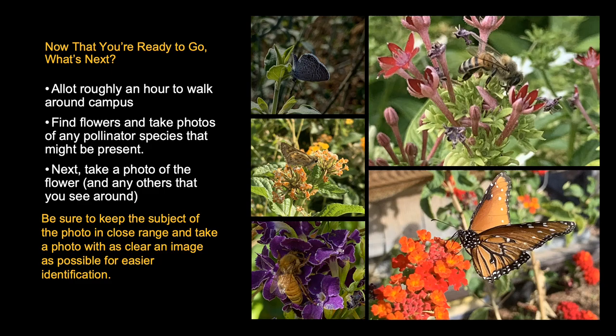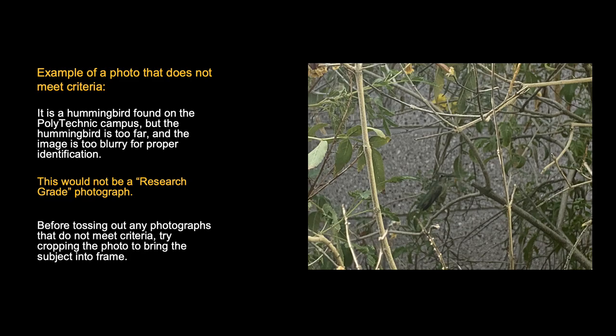We ask that you take photos of at least six different pollinator species and six different flower species. Be sure to keep the subject of the photo in close range and make the photo as clear as possible for easier identification. The photos shown on the slide are examples of what iNaturalist would consider research grade photos. An example of a picture that does not meet criteria is a photo of a hummingbird on Polytechnic campus where the hummingbird is too far away and the image is too blurry for proper identification.